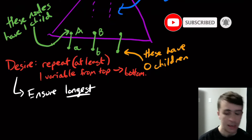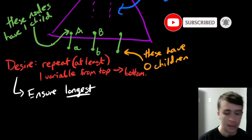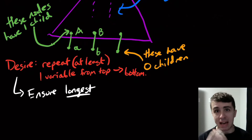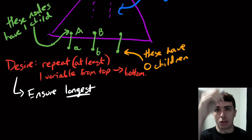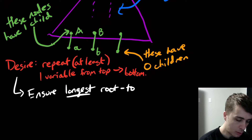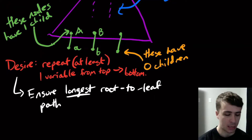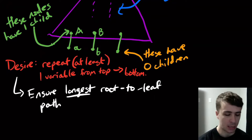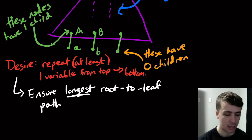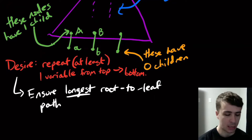All we really need is to consider one specific path going from the top to the bottom. We need to ensure that the longest root-to-leaf path repeats some variable. As long as we have that one working, it's okay. We need at least one path from the root to a leaf to have some kind of repetition — that's how we write 'top to bottom' formally.